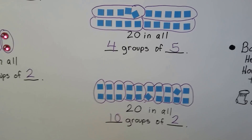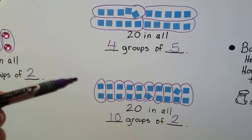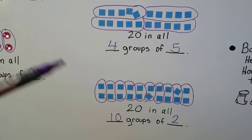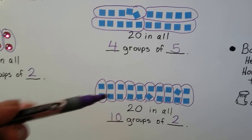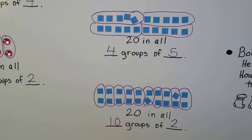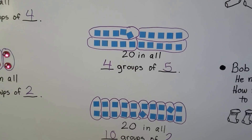Odd numbers don't break up very easily. But if it's an even number — like two, four, six, eight, ten, twelve — then it's going to break up easier.